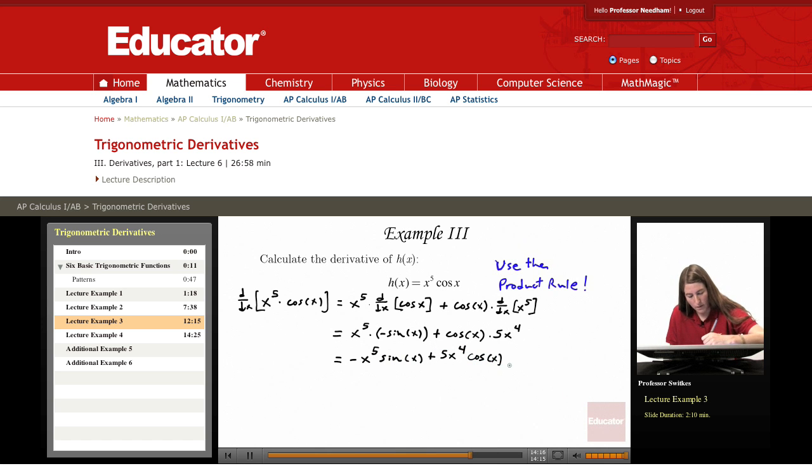That would be our result here for the derivative of x to the fifth times cosine of x. And so let's look at another example.